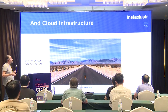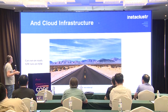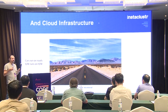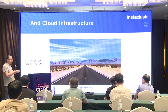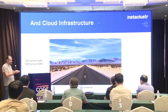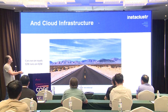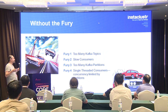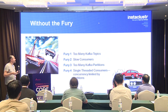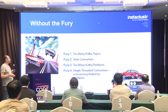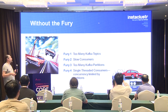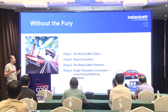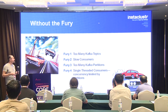You also need cloud infrastructure. Cars run on roads and software runs on hardware, so you need to provide the right scale of hardware as well. The talk is primarily focused on software, and you want to be able to do this without the fury — without too many problems. I'm going to talk today about four example furies or problems that I have come across in the last six or so years building complex Kafka applications.